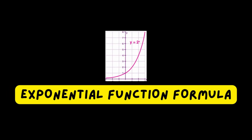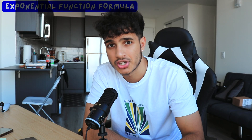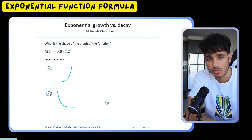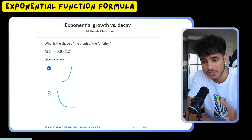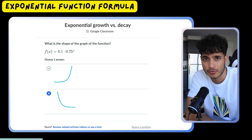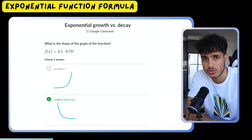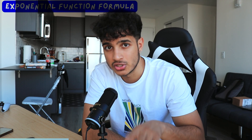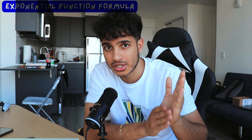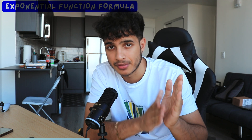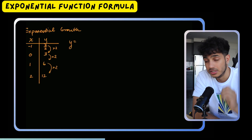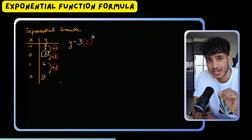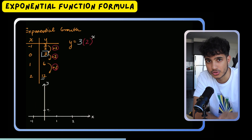The exponential function formula is a necessity for you to understand. You've got population growth and population decay. When you dissect this formula, there's the base value — it's usually the starting amount for a population. Then inside the parentheses is your rate: it's either one minus a percent if it's decay, or one plus a percent if it's growth. Then you have your time variable, which is the exponent. These problems are very easy once you know this formula.